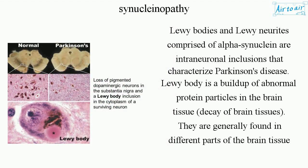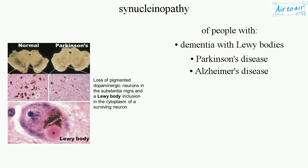Lewy bodies and Lewy neurites, comprised of alpha-synuclein, are intraneuronal inclusions that characterize Parkinson's disease. A Lewy body is a buildup of abnormal protein particles in the brain tissue, leading to decay of brain tissues. They are generally found in people with dementia with Lewy bodies, Parkinson's disease, and Alzheimer's disease.